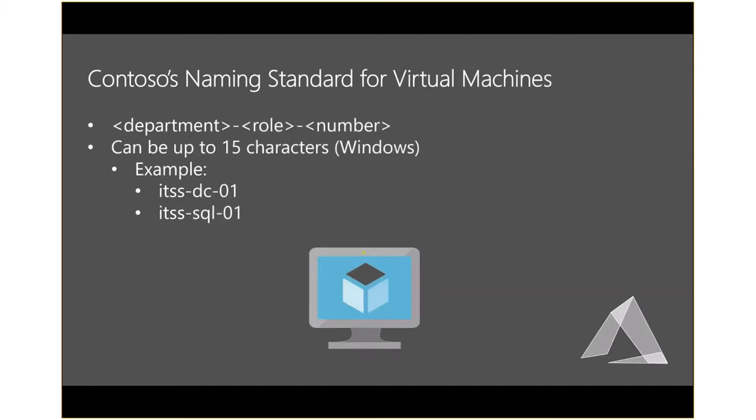Here's our naming standard for VMs. We kept it simple: department-role-number. For Windows, it can be up to 15 characters; Linux is 64. An example would be ITSS-DC-01 for a domain controller, or ITSS-SQL-01 for a SQL server.